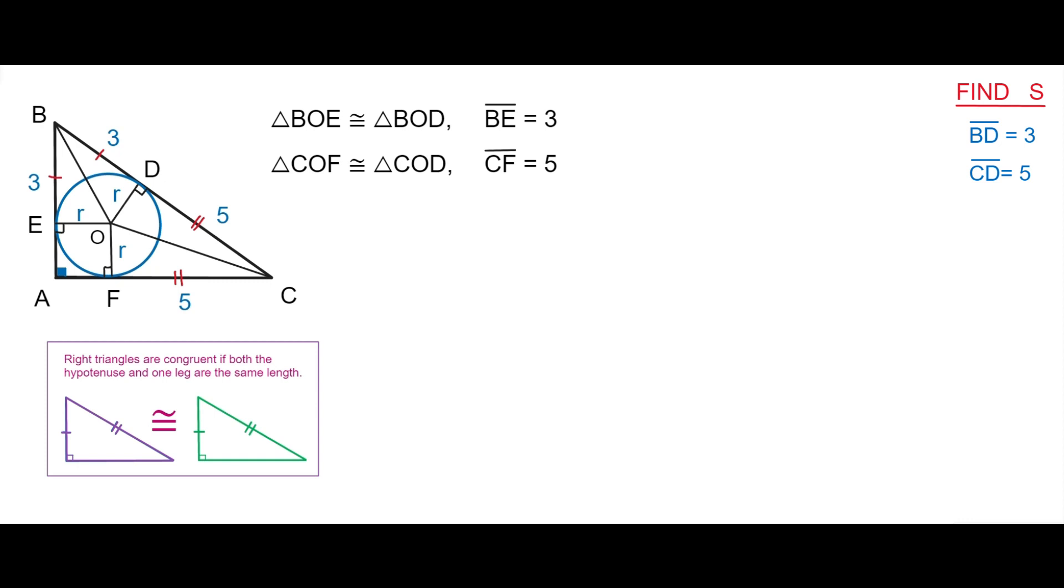It is obvious that the rectangle AEOF is a square, because the sides EO and OF are congruent. Therefore the side EA is R and the side AF is also R.